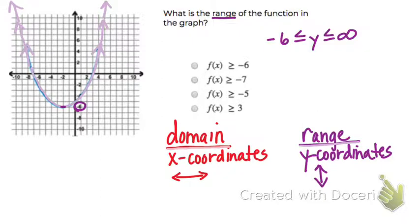Or we could use f(x) goes from negative 6 up to positive infinity. Or notice they're not saying it that way in any of these choices. We can say all of the y coordinates are above negative 6, so they're bigger than negative 6.